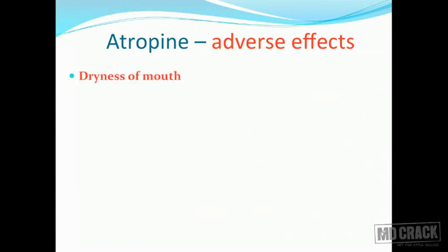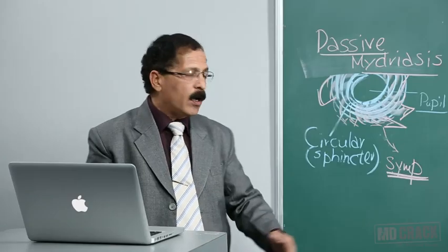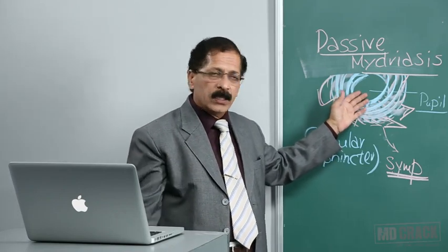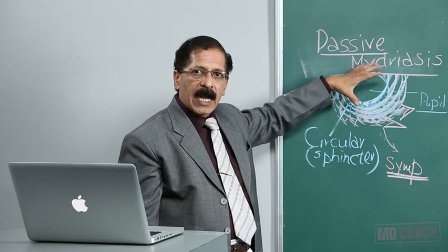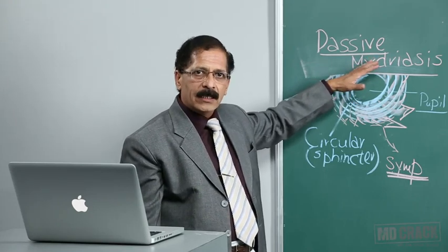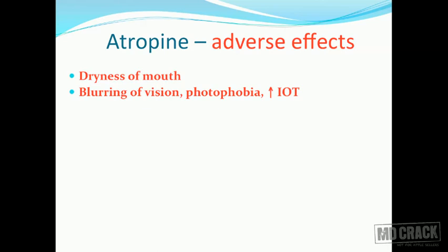Adverse effects of atropine: first is dryness of mouth due to decreased secretions. Second is blurring of vision and photophobia — the lens is fixed and cannot accommodate, the pupil is dilated and fixed, and because atropine has paralyzed the constrictor pupilli the pupil cannot constrict in response to light, leaving it wide open. The patient cannot tolerate bright light and is compelled to close the eyes — photophobia. There is also increased intraocular tension.